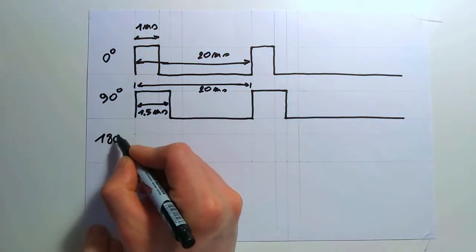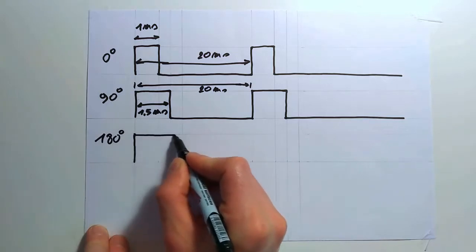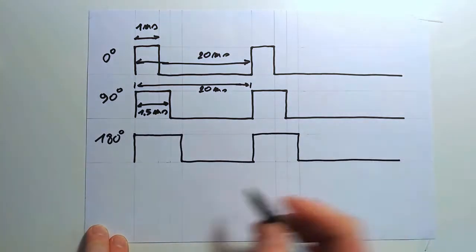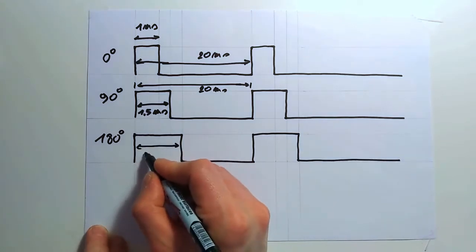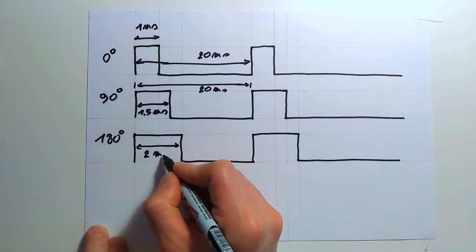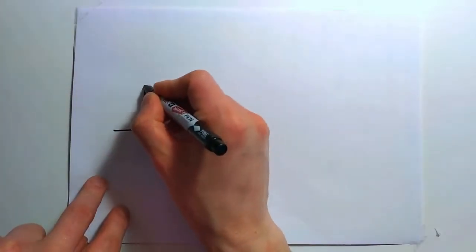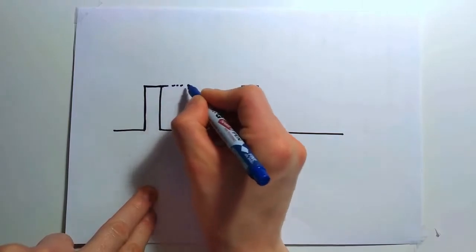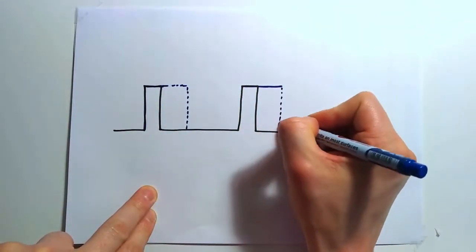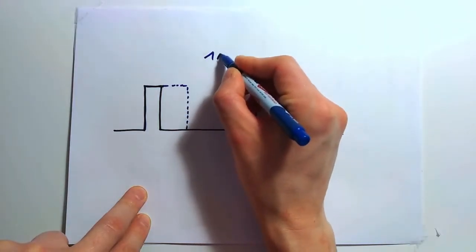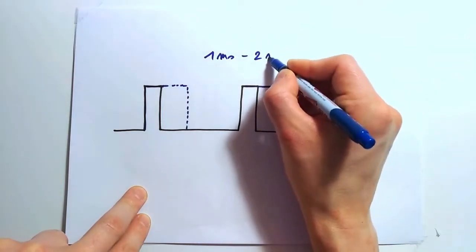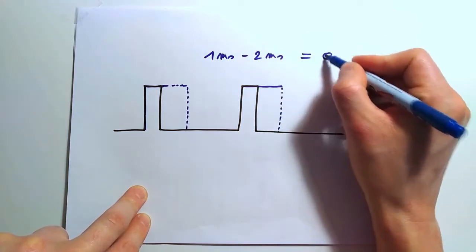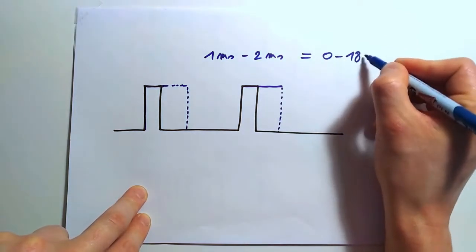The pulse width can be modulated in a range between 1 and 2 milliseconds. This corresponds to a range from 0 to 180 degrees position. It might seem a bit complicated right now. You're probably wondering how to make the PWM signal.